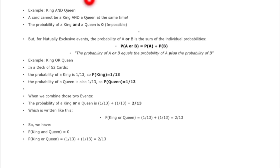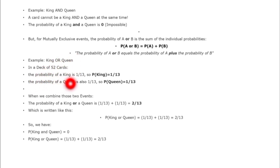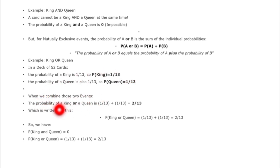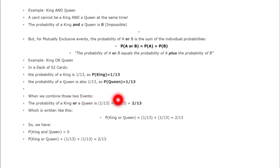For example, in a deck of 52 cards, the probability of a king is 1/13 and the probability of a queen is also 1/13. When we combine these two events, the probability of king or queen will be 2/13. This is the total probability that either a king or a queen can occur.